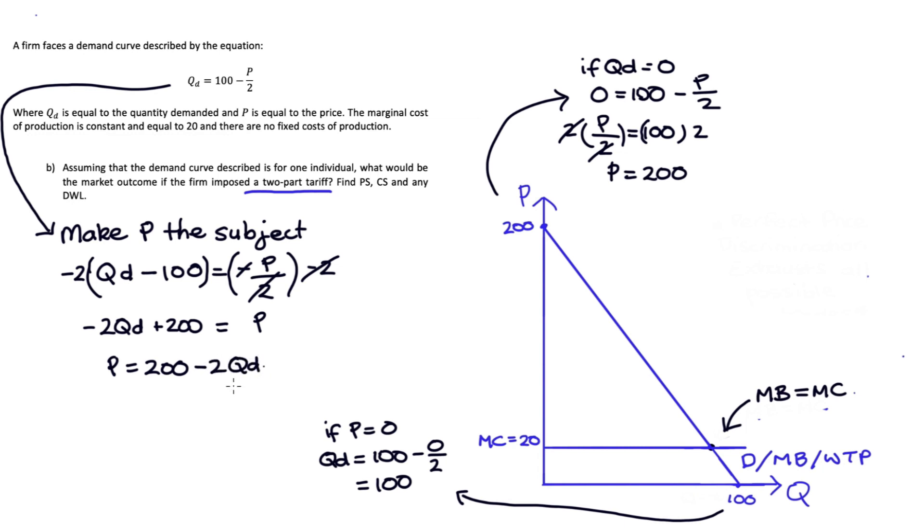Now we can set demand described in this way (this is actually an inverse demand equation) equal to marginal cost. So 200 minus two QD equals marginal cost, which is 20. Solving for quantity, I take away 200 from both sides, getting negative two times QD equals negative 180. Dividing both sides by negative two gives QD equals 90.